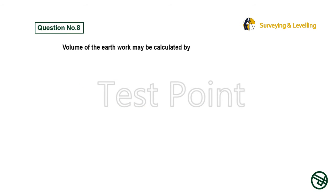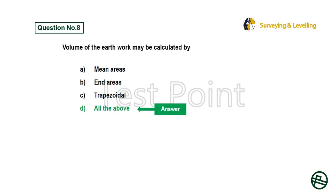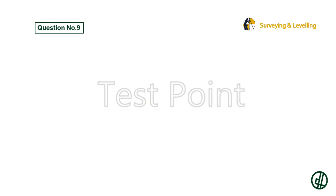Question 8: Volume of the earth work may be calculated by — Option A: Mean areas. Option B: End areas. Option C: Trapezoidal. Option D: All the above. Answer is Option D: All the above.